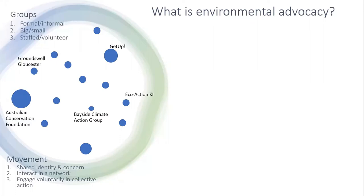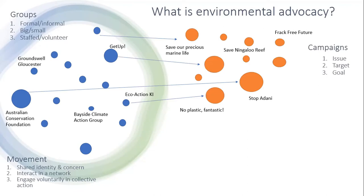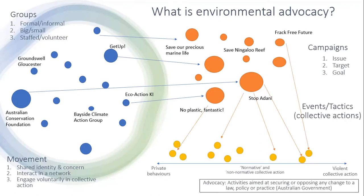The movement is composed of groups — big ones, little ones, small ones, informal and formal ones, from staff to volunteer, every kind of variety and combination. Some of these groups engage in campaigns. Campaigns are an organised course of action to achieve a goal, and each campaign has three characteristics: an issue, a target and a goal. Some groups do lots of campaigns, some don't. Some campaigns have lots of groups and some don't. As part of a group and a campaign, people are involved in events, actions or collective actions.